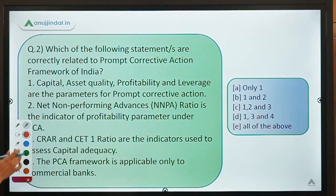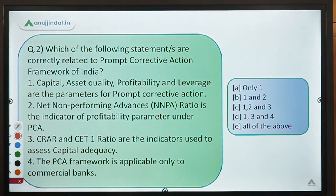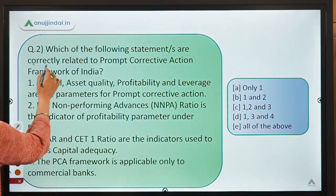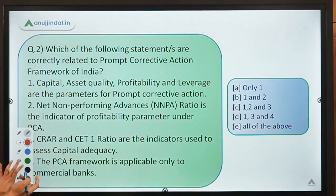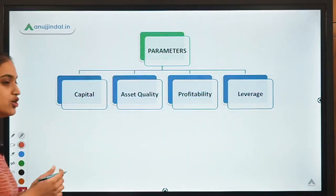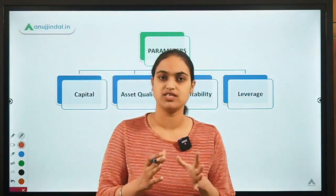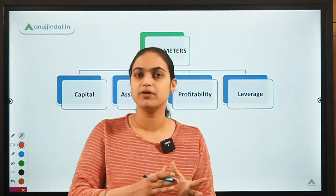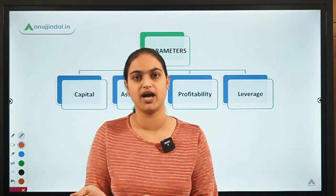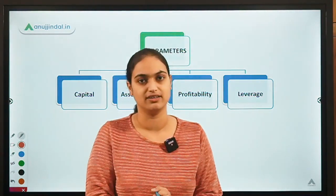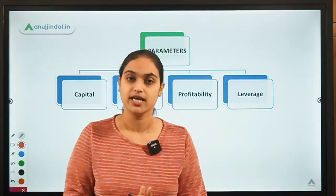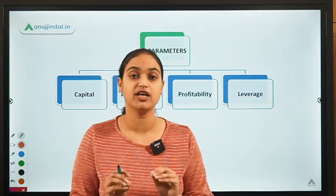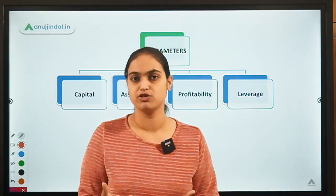Now let's move on to question number 2, which says: which of the following statements are correctly related to the PCA framework of India? Let's discuss more about Prompt Corrective Action. On the basis of certain parameters, some indicators have been decided by RBI and banks must adhere to such standards. If they are not able to do so, RBI will intervene. Moreover, this PCA framework is only applicable to scheduled commercial banks.